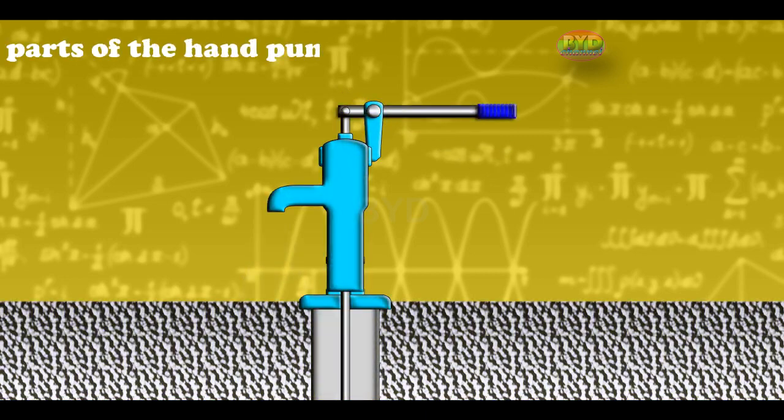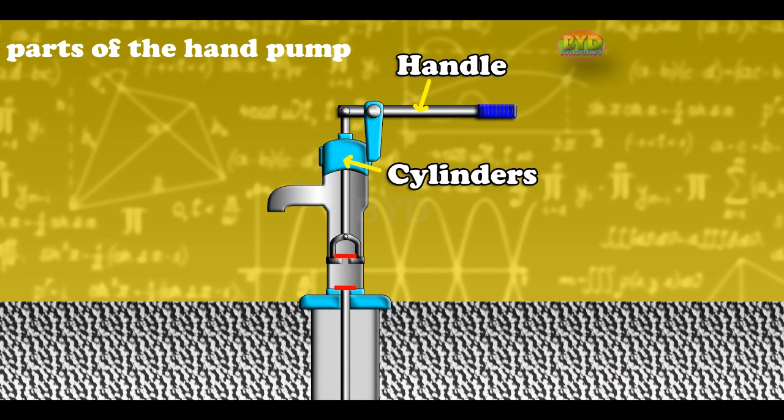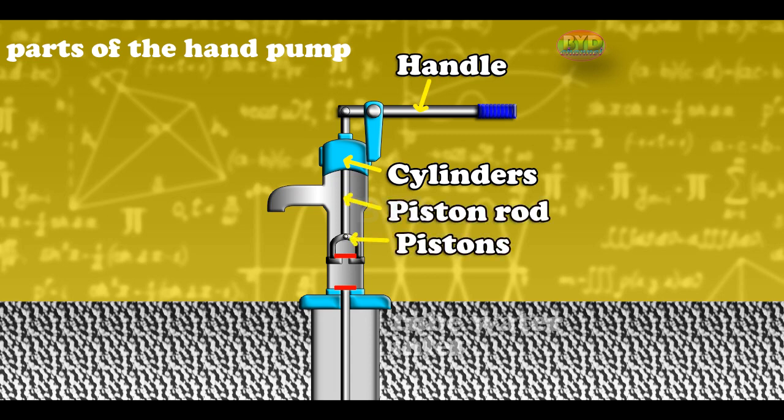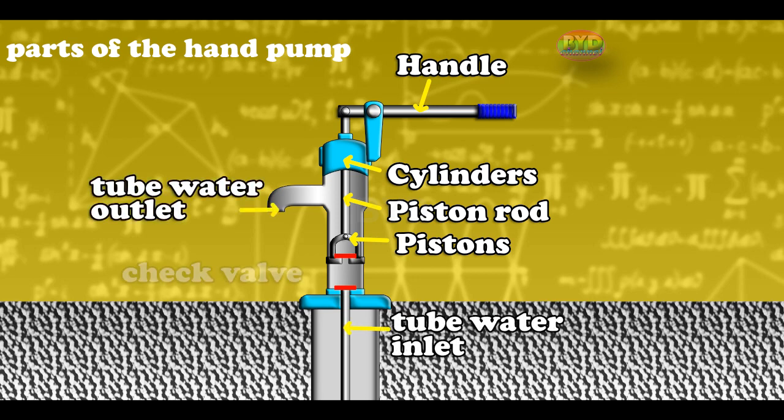Parts of the hand pump: The main components of hand pumps are handle, cylinder, piston rod, pistons, tube water inlet, tube water outlet, and check valve.